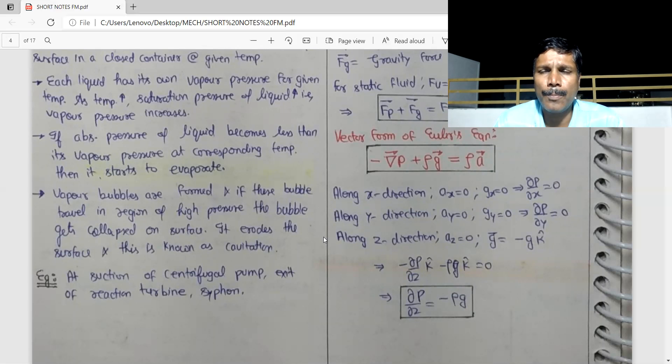Where is cavitation formed? At pump entry, turbine exit. Turbine exit is formed. Ship propeller. So cavitation is formed at pump entry, turbine exit.